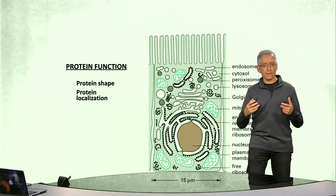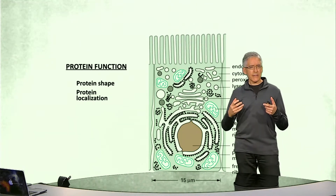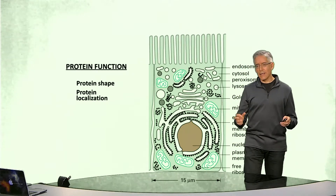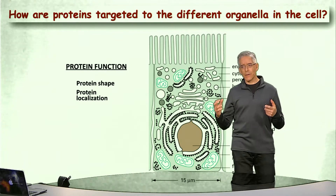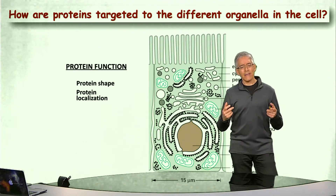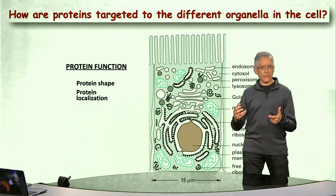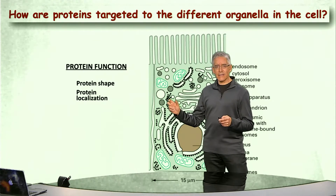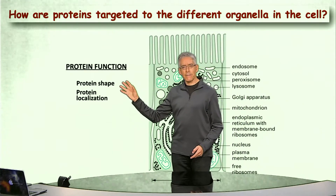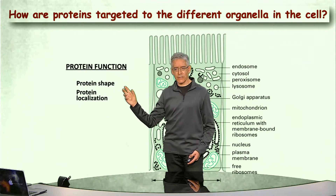This need for proteins to be in the right cellular location brings along one of the most critical questions in molecular cell biology: how are proteins targeted to different organelles in the cell? The answer obtained after extensive experimentation indicates that just like the shape of a protein is directly dictated by its amino acid sequence — that is, its primary structure — similarly, the location of a protein is also dictated by its amino acid sequence.